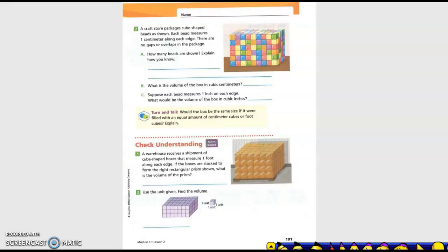The cost of our package includes two beads as shown. Each bead measures one centimeter along each edge. There are no gaps or overlaps in the package. How many beads are shown? Explain how you know. Let's count our length: one, two, three, four, five, six, seven, eight, nine. So nine is our length.